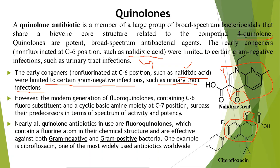In this part 2 we will discuss the medicinal chemistry of quinolones and fluoroquinolones. The modern generation of fluoroquinolones contain a C6 fluoro substituent and a cyclic basic amine moiety at the C7 position, surpassing their predecessors in spectrum of activity and potency. Nalidixic acid involved an isosteric replacement of nitrogen with carbon. In ciprofloxacin, you can see that a piperazine ring is attached at the 7th position and a fluoro substituent is at the 6th position — this is why it is called a fluoroquinolone.